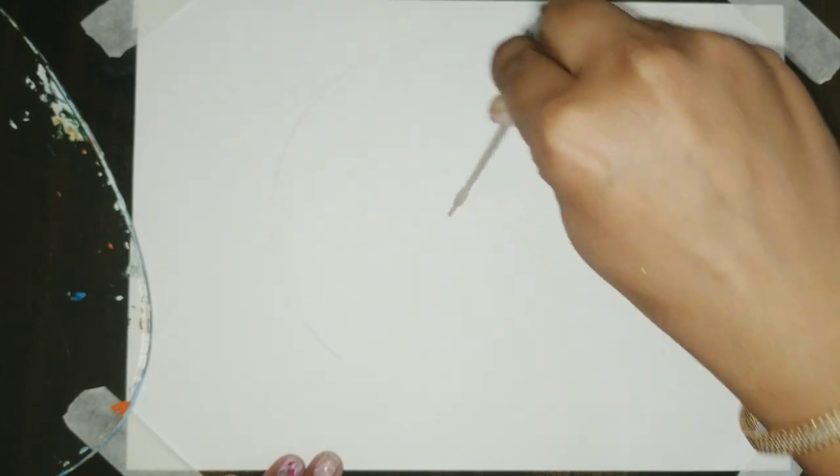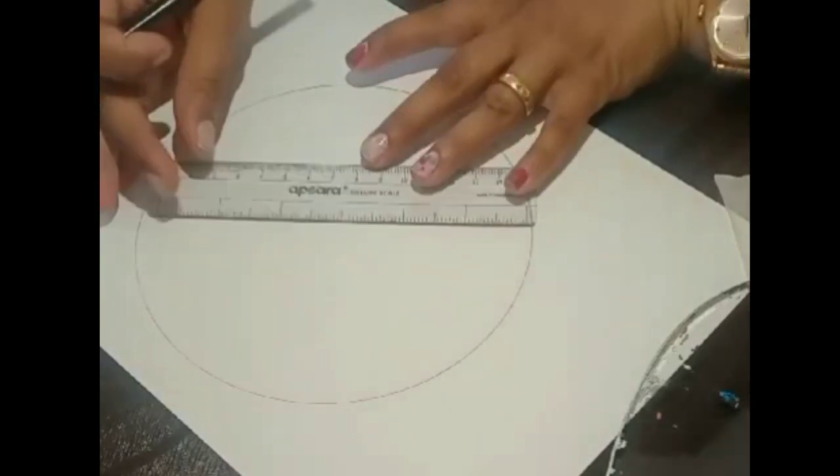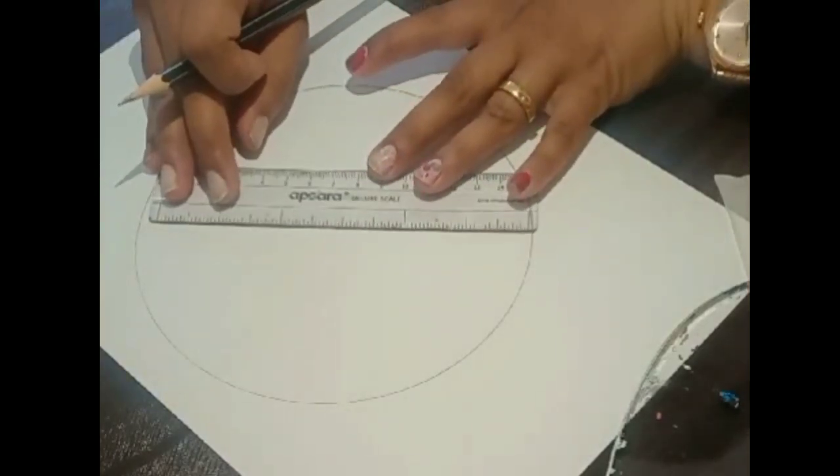First of all, we will make a circle and we will divide a circle in 12 equal parts. I have a question here.